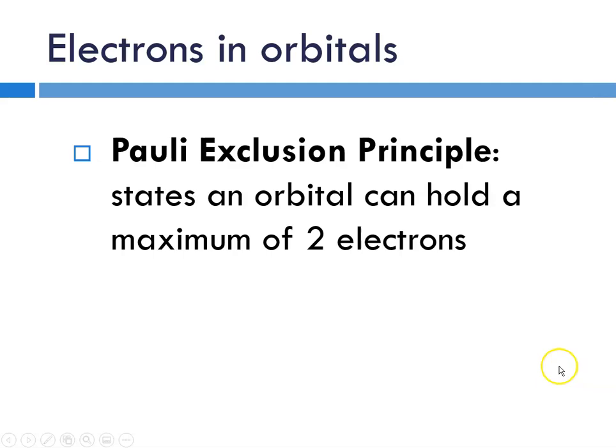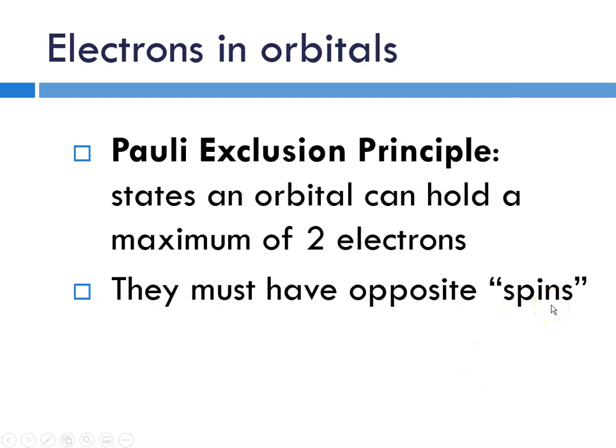The second rule when talking about how electrons occupy orbitals is called the Pauli exclusion principle. That states that an orbital may only hold a maximum of two electrons, and those electrons must have opposite or paired spins. If you think about electrons, they're negatively charged, and we know that like charges repel. So how do they pull that off? They have what is called coupled spins. For our purposes we're going to say they have opposite spins, and we're going to show that in a two-dimensional sense with one arrow pointing up and one arrow pointing down. We'll use an arrow to denote an electron.